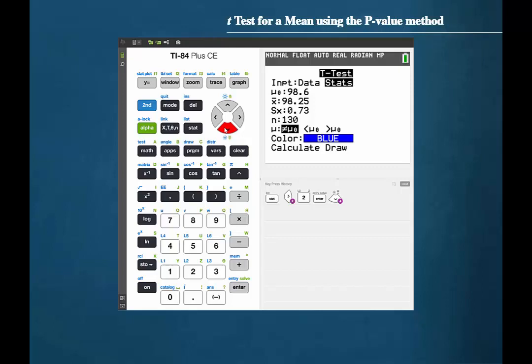On the next line, we must make sure that we accurately specify the orientation of the alternative hypothesis. This is a two-tailed test, so we will make sure that the not equal to symbol is highlighted and press ENTER.